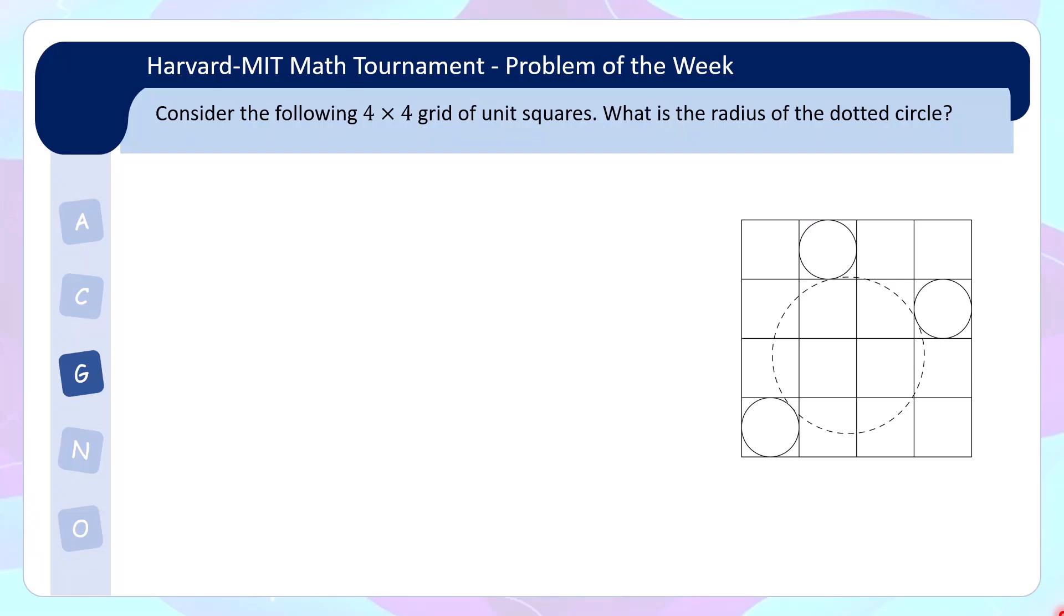Consider the following 4x4 grid of unit squares. What is the radius of the dotted circle?